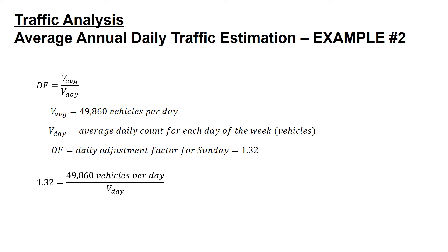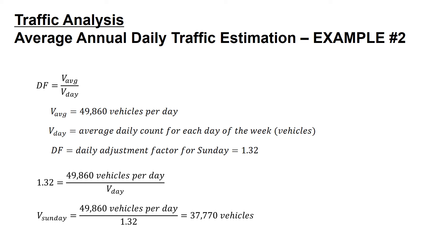We know the daily adjustment factor for Sunday is 1.32. Setting our daily adjustment factor equal to 1.32, that equals 49,860 vehicles per day divided by our average daily count. Solving for V sub Sunday, the average volume on a Sunday equals 49,860 vehicles per day divided by 1.32, giving us an expected average Sunday volume of 37,770 vehicles.